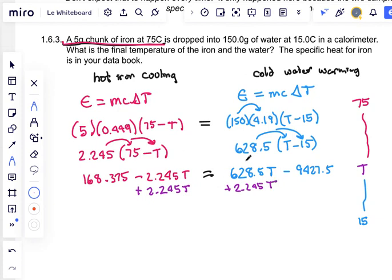We can add that amount onto each side of our equation, or you can think of this as take the negative 2.245T to the right and it becomes a positive 2.245T. That totally works. Either way, you'll end up with 168.375 equals 628.5 plus 2.245, which is 630.745T. And then we have our minus 9427.5 here. Okay, all our T's are on the right now. Great.